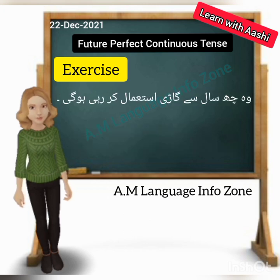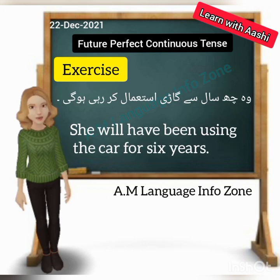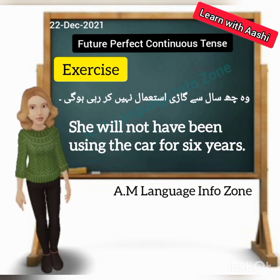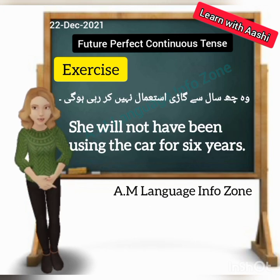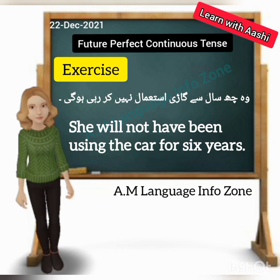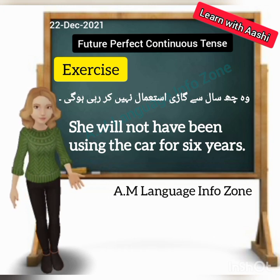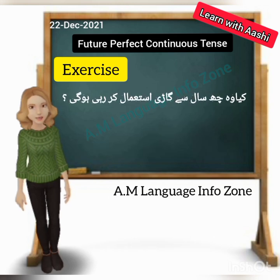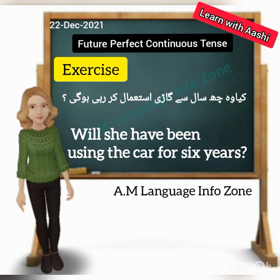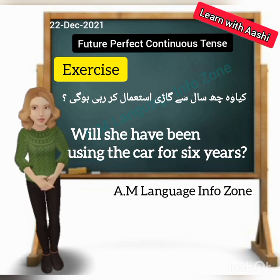Fourth sentence: 'Woh chhe saal se gaari istemal kar rahi hogi' — 'She will have been using the car for six years.' Negative: 'She will not have been using the car for six years.' Interrogative: 'Will she have been using the car for six years?'